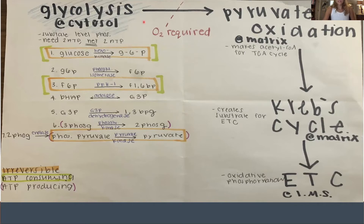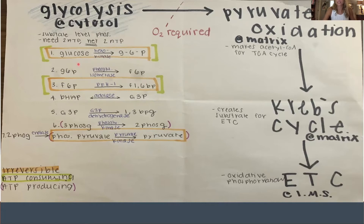We're going to focus on glycolysis today because it seems daunting with so many steps and enzymes to memorize. But if you know either the enzymes or the substrates, you know everything else, because the enzymes are named after what they do. For example, the first step converts glucose to glucose-6-phosphate — someone added a phosphate — so it has to be a kinase, because that's what kinase means.